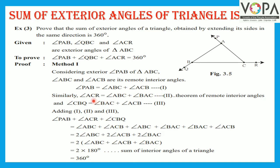Similarly, by the theorem of remote interior angles, we can write: angle ACR is equal to angle ABC plus angle BAC — statement number 2. And angle CBQ is equal to angle BAC plus angle ACB — statement number 3.